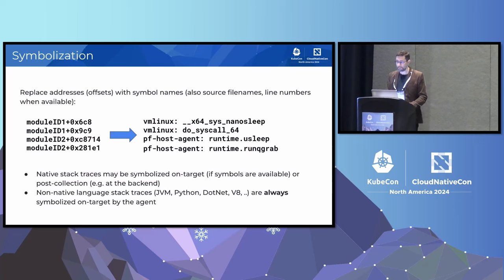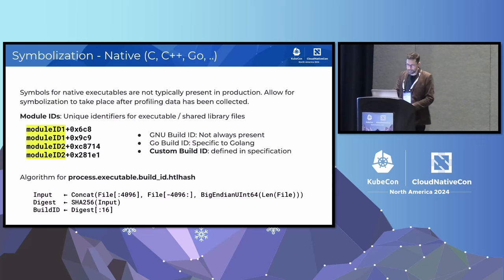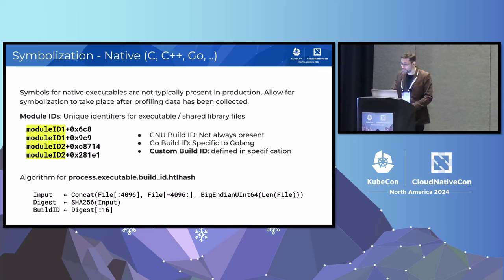Besides unwinding, the other major operation the agent performs is symbolization. Symbolization takes a stack trace from unwinding and annotates frames with symbolic information such as function name, file name, and line number. For example, on the left you can see an unsymbolized stack trace and on the right the same trace symbolized. This is a native stack trace where the top two frames are kernel frames and the bottom two are user-space frames from a Go application. For native executables, symbols are not typically present in production as they can be hundreds of megabytes or gigabytes in size, so we need another way to perform symbolization, possibly on the backend. We can do that by relying on module IDs — unique identifiers for executable or shared library files.